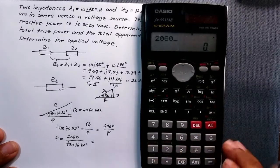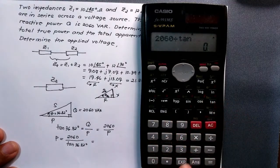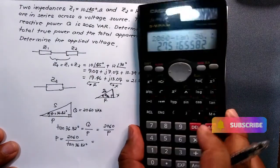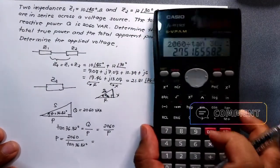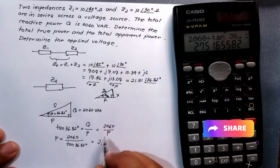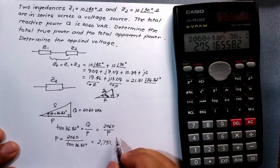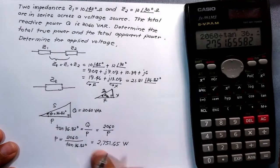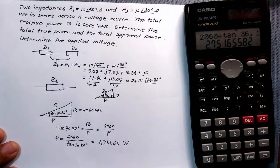To solve for P, we rearrange: P = 2060 / tan(36.82°). Calculating this gives P = 2060 / tan(36.82°) = 2751.65 watts.